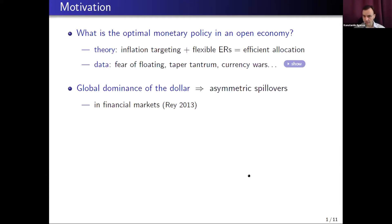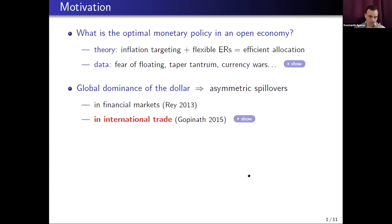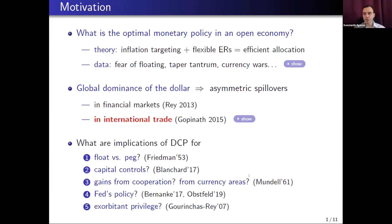Another growing literature has emphasized that the dollar also plays an important dominant role in international trade, where firms set prices for their goods in dollars disproportionately more often than in other currencies. Gita Gopinath in her Jackson Hole paper provided evidence that most countries set prices for most of their goods in dollars and these border prices remain sticky in dollars. In our paper, we explore the implications of this global role of the dollar in international trade for optimal policy.